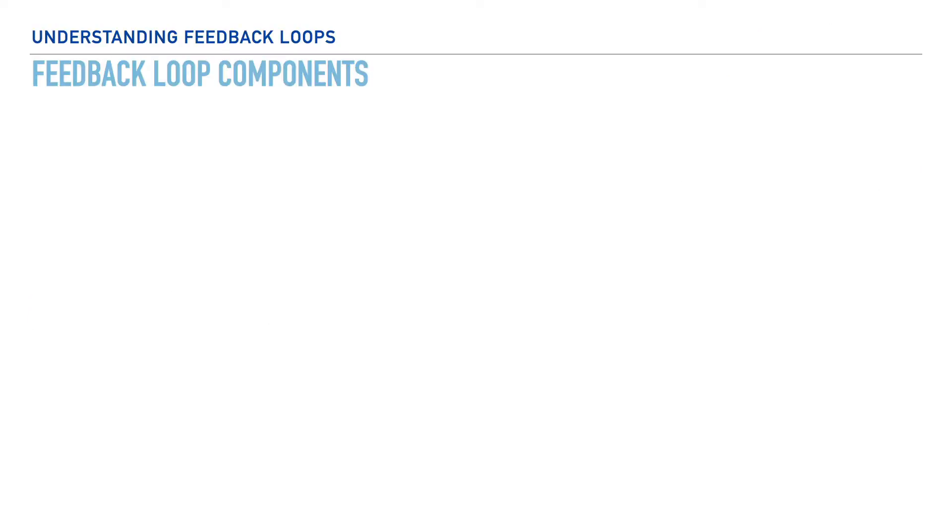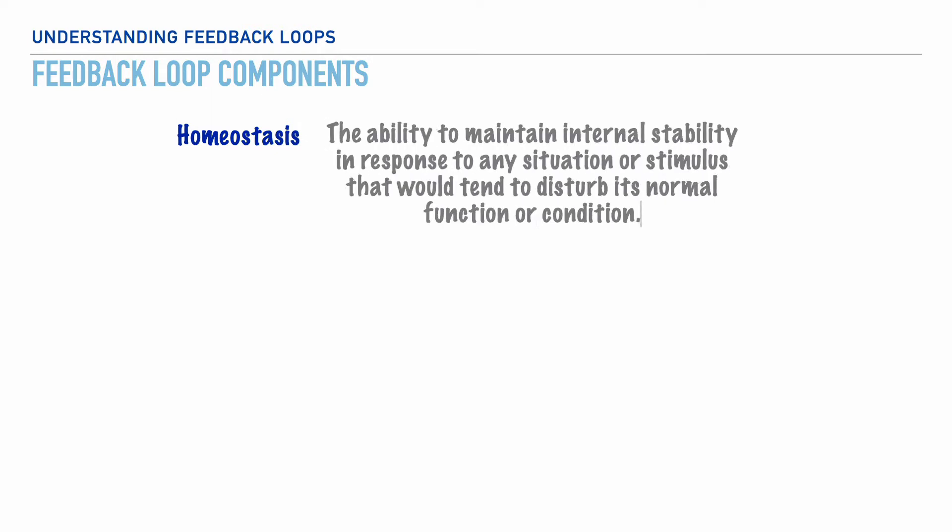Now, the key word that I need to put before you is homeostasis, and the dictionary definition is the tendency of a system, namely our body systems, to maintain internal stability in response to any situation or stimulus that would tend to disturb its normal function or condition.